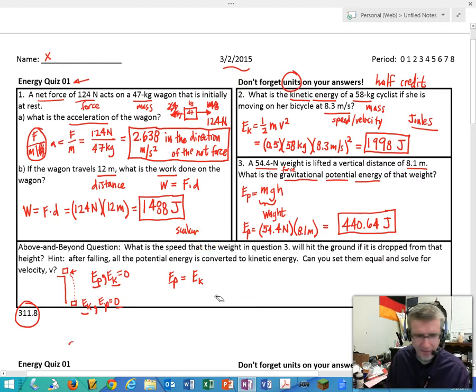Where this was at the top, or before it fell, and this was at the bottom. So 440.64 joules equals one half times the mass times the velocity squared.